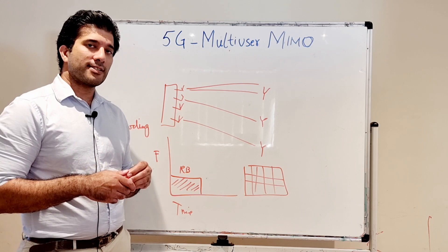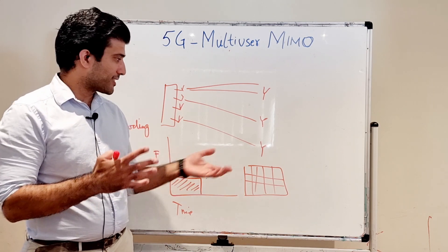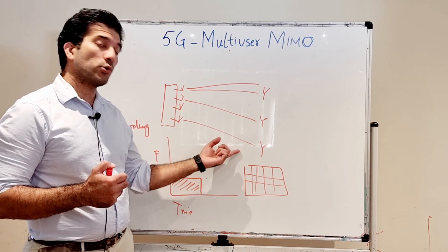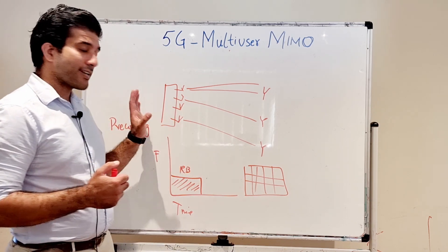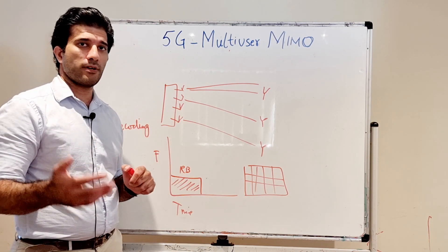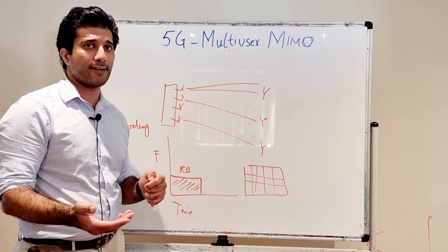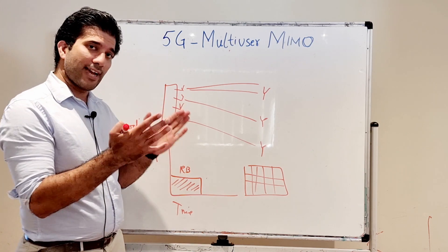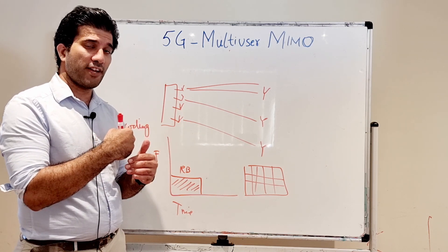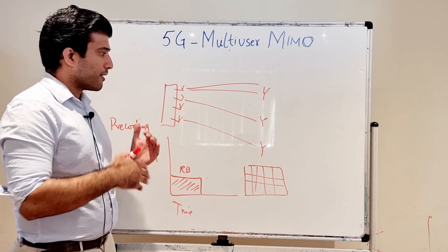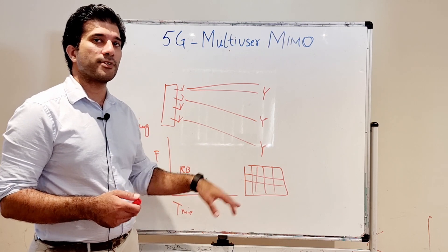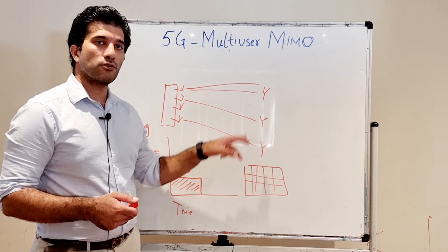In the precoding matrix, certain weights are assigned basically from this channel estimation, and a precoding matrix is calculated using those weights. That precoding matrix is applied—you will have to go into the Fourier transform and inverse Fourier transform. Different techniques are used in this precoding, but in the end the beams are orthogonal to each other and you can use the same resource for transmitting to multiple users.